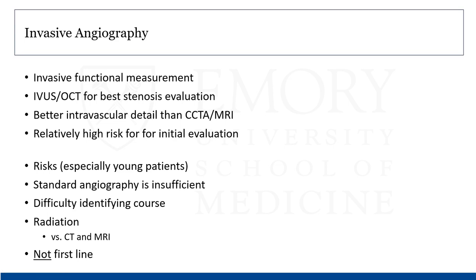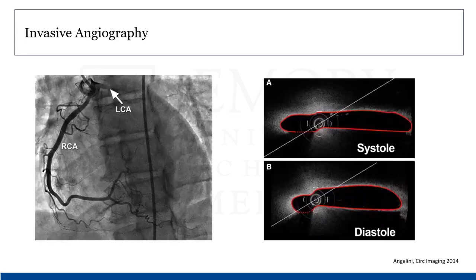Here we see an angiogram with a right coronary and the start of a left suggesting an anomalous origin. OCT images of the proximal segment of an anomalous left show a very slit-like orifice with great resolution.